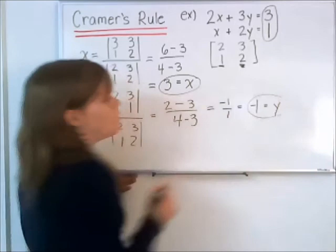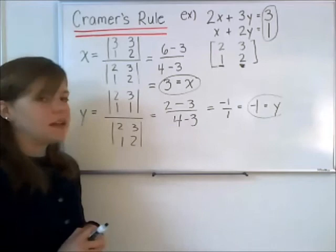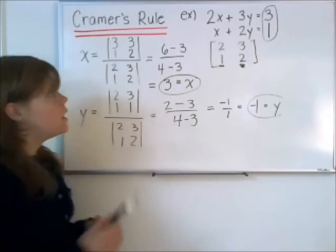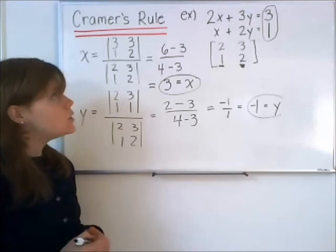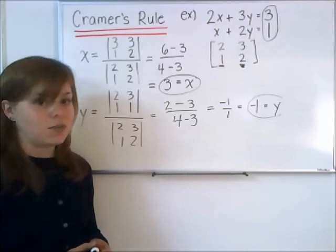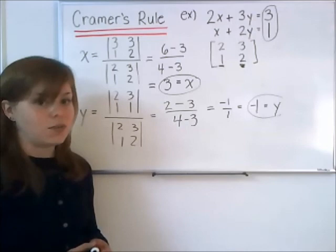Our x value we got from the first calculation, and the y value we got from the second one. That's Cramer's Rule. This can be applied to 3 by 3, so 3 equations with 3 variables, 4 equations with 4 variables, and so on. All you're doing is the same thing, but now your determinants are larger. Depending on which variable you're trying to find, you replace the right side of your system of equations as a column into the column representing the variable you're trying to find.